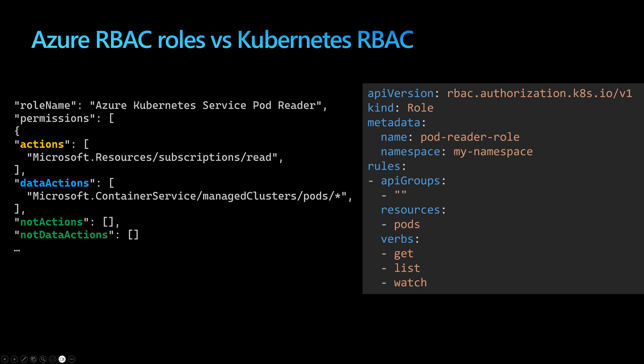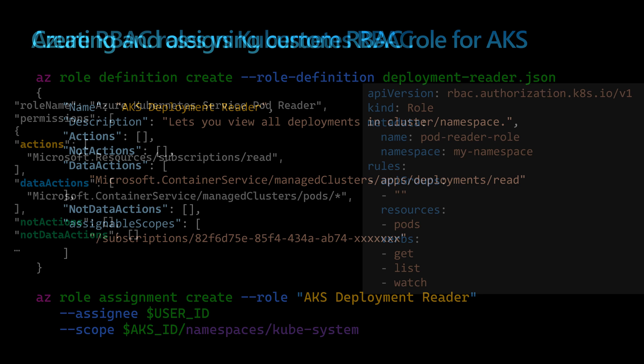Azure RBAC roles are just an alternative to the Kubernetes native approach. The key difference is that you define those roles not inside your AKS cluster, but on the Azure Management Plane — at a higher level — and then you can apply them to one or multiple AKS clusters.